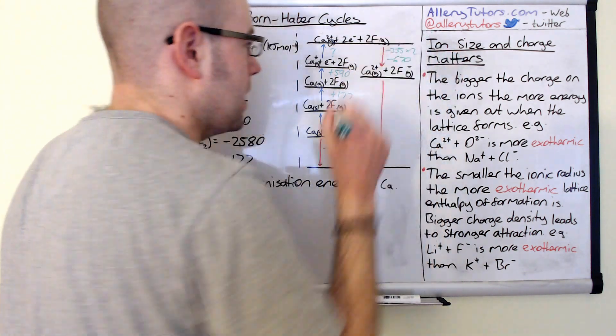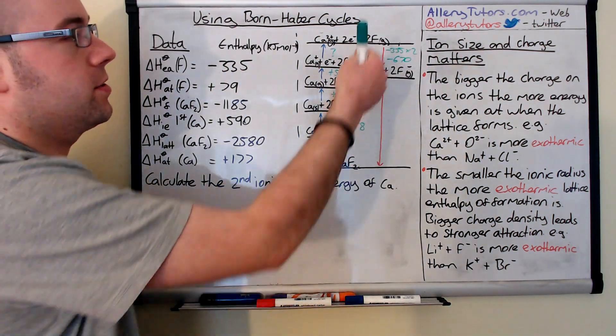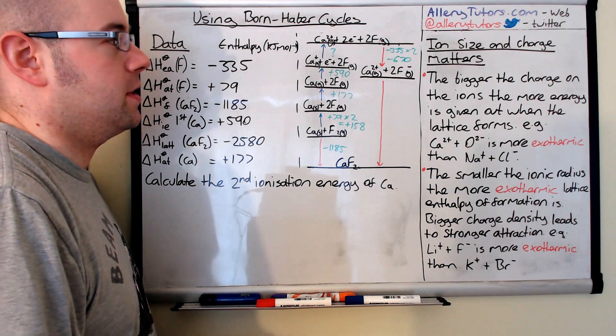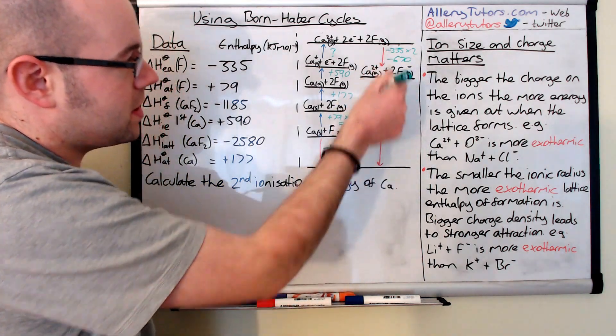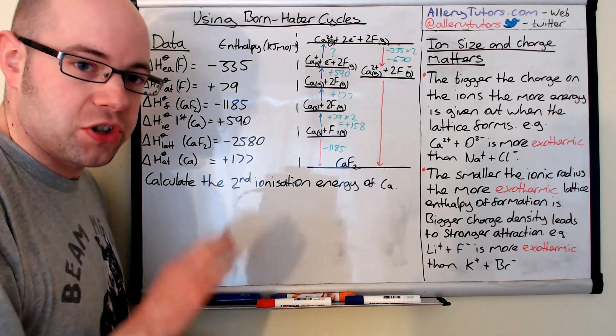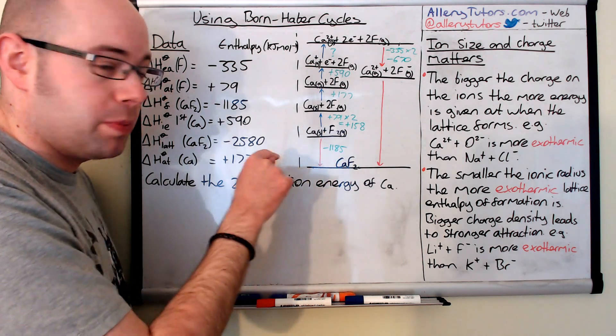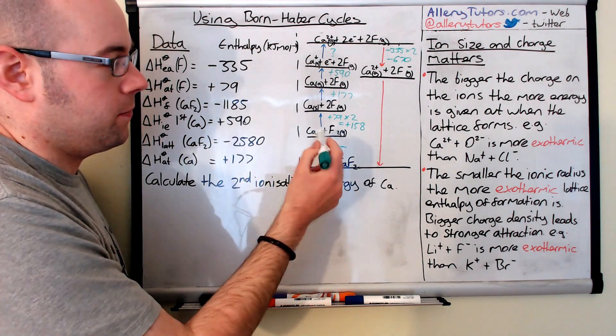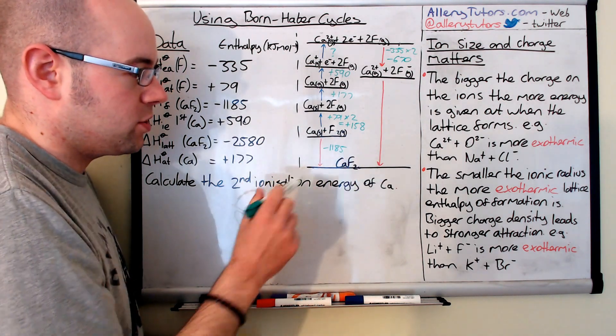Okay it's negative because it's exothermic. So that's what the red arrow will symbolize on here. And in the last step this is the lattice enthalpy of formation. Again it's different from enthalpy of formation which is the formation of one mole of a substance and this would be a solid substance.